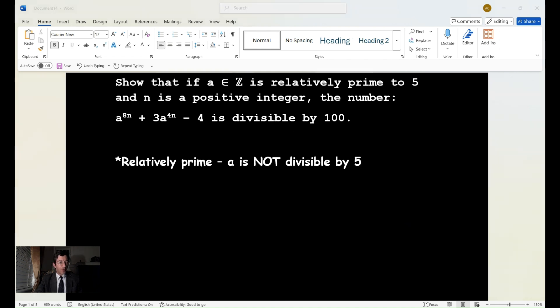For those of you who are not familiar with number theory or the terminology, the term relatively prime is a somewhat pedantic way of saying that a is not divisible by 5. So I want you to pause the video and see if you can solve it. Let me know in the comment sections what you get. Let me know if you're familiar with this type of problem and number theory. And then I will share with you the solution.